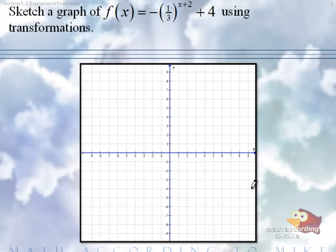And... One, what's our base? One-third. So zero, one. And one, comma, third.